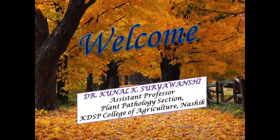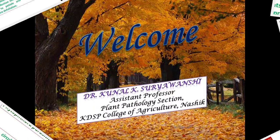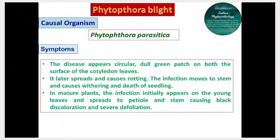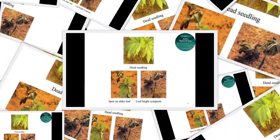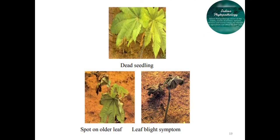Hello friends, today we are going to see diseases of castor. In that we will see Phytophthora blight. Phytophthora blight of castor is one of the common diseases that occur on castor crop and it is caused due to Phytophthora parasitica. You can see the symptoms of this Phytophthora blight on castor crop.